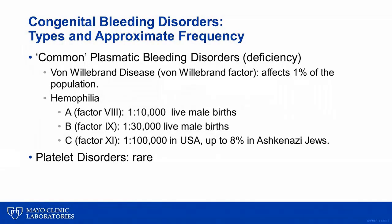Congenital bleeding disorders may be categorized into coagulation factor deficiencies and platelet disorders. The most common coagulation factor deficiency-related bleeding disorder is von Willebrand disease, a deficiency of von Willebrand factor. This affects approximately 1 in 10,000, and hemophilia B affects approximately 1 in 30,000 live male births. Hemophilia C, which is factor XI deficiency, affects about 1 in 100,000 of the U.S. general population, but up to 8% of individuals of Ashkenazi Jewish descent. The prevalence of platelet disorders is not accurately quantified; they are rare, but also likely underdiagnosed.